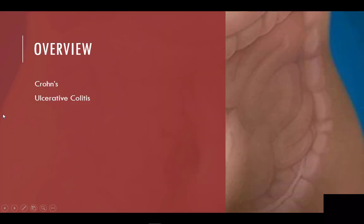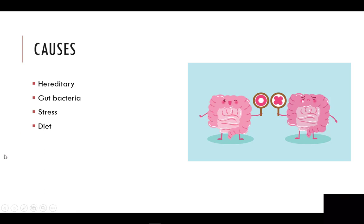Inflammatory bowel disease includes two disorders known as Crohn's and ulcerative colitis. These inflammatory diseases are autoimmune disorders, which means the immune system mistakenly attacks healthy tissue. In the case of Crohn's and ulcerative colitis, the healthy tissue of the small and large intestine are affected. The main cause of this autoimmune disorder is genetics, but there are a few associations with stress and diet leading to an imbalance in gut bacteria.